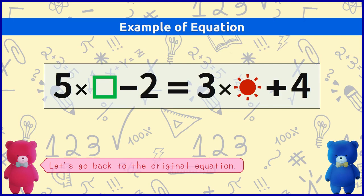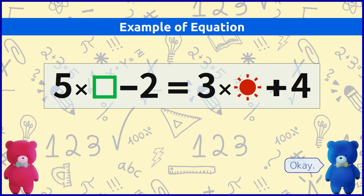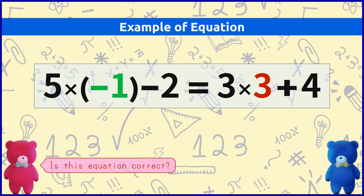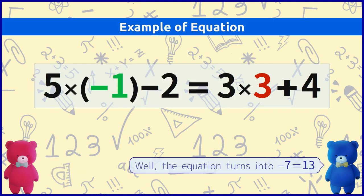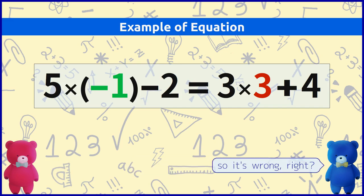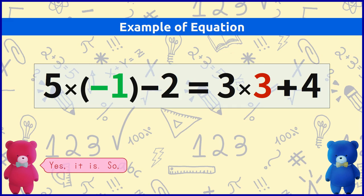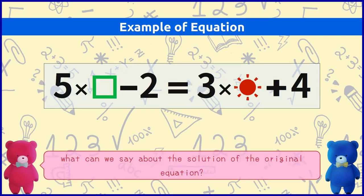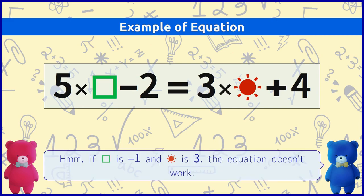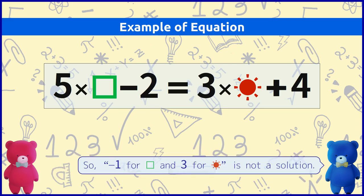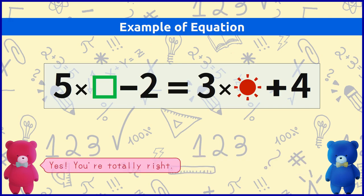Let's go back to the original equation. Okay. Is this equation correct? Well, the equation turns into minus 7 equals 13. So it's wrong, right? Yes, it is. So what can we say about the solution of the original equation? If square is minus 1 and sunshine is 3 the equation doesn't work. So, minus 1 for square and 3 for sunshine is not a solution. Yes. You are totally right.